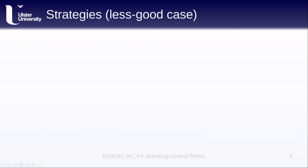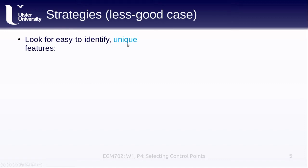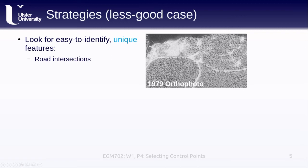In cases where planning wasn't done beforehand — such as when using historic air photos — we need to use features we can see in the landscape. We're looking for easy-to-identify, unique features so we can be sure we're looking at the right point. Good examples include road intersections, bridges, buildings depending on the scale of your images, and peaks or crests — features that can be found in multiple images.